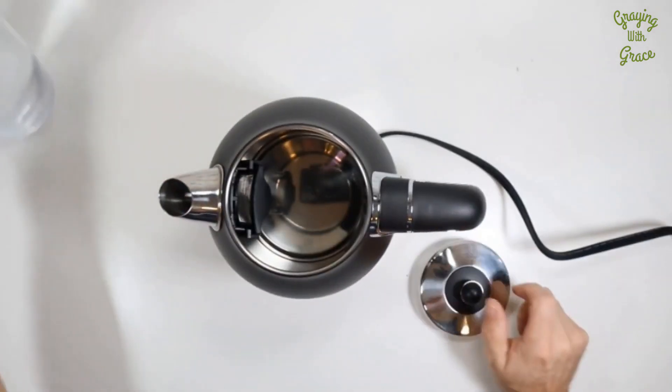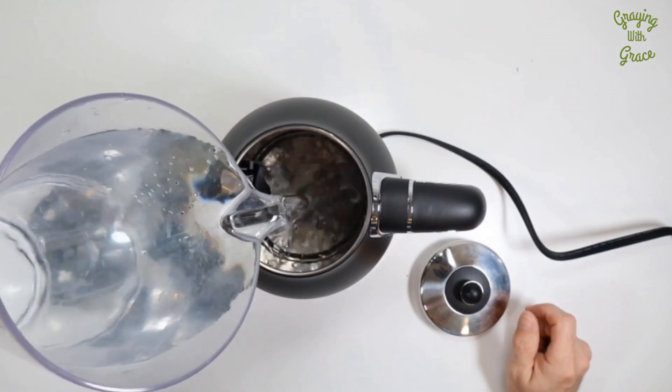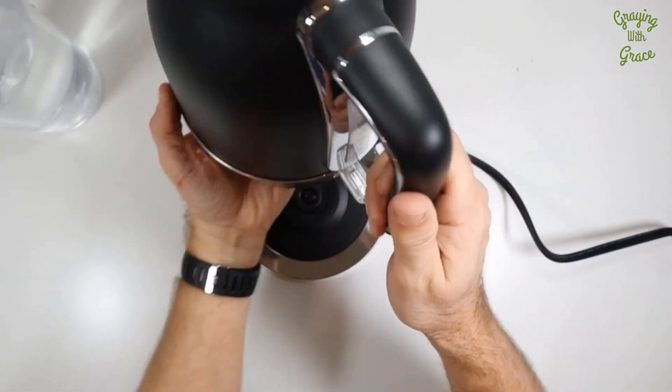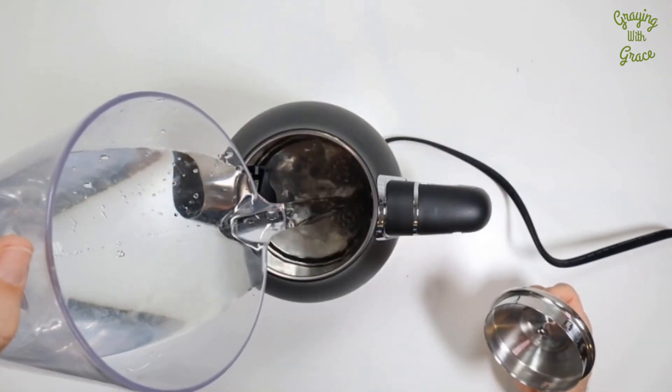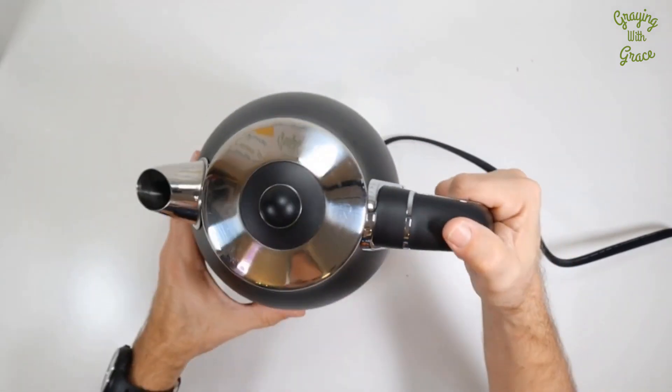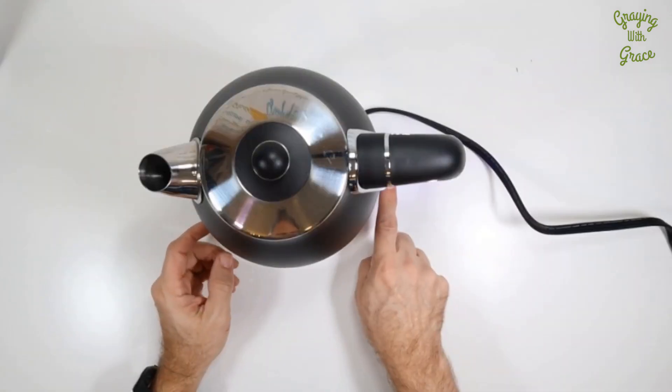So remove the lid, pour the water in here, replace the lid, and then on the side, make sure you've got the minimum. We need to put a little bit more in there to reach the minimum level. All right, so it's now ready. You press the switch down to get it started.